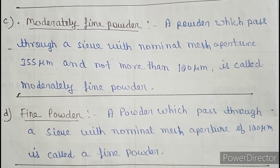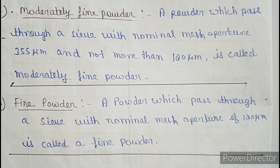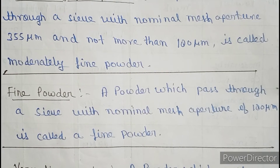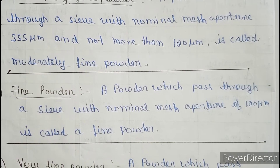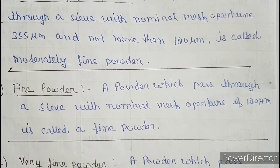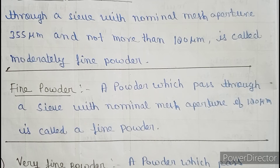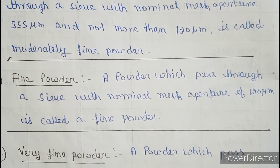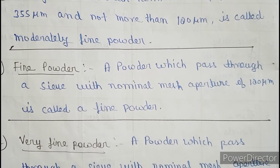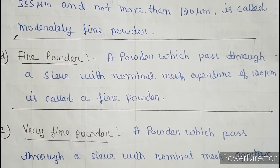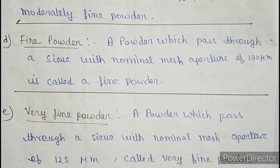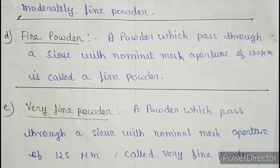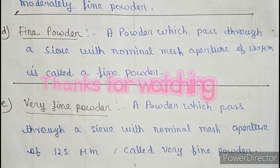Fine powder is a powder which passes through a sieve with a nominal mesh aperture of 180 micrometers. Very fine powder is a powder which passes through a sieve with a nominal mesh aperture of 125 micrometers. Thank you.